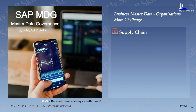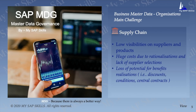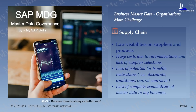In the supply chain and planning system, low visibility on suppliers and products is a main concern. Organizations face huge costs due to rationalization and lack of supplier selection. Loss of potential for benefit realization — such as discounts, conditions, and central contracts — and lack of complete availability of master data in the business put supply chain and planning management systems at greater risk.